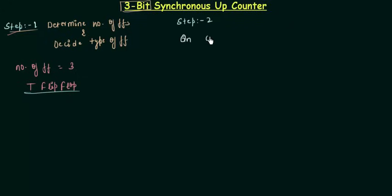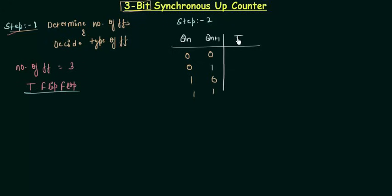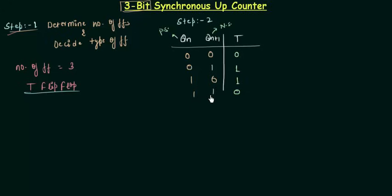For the T flip-flop excitation table, Qn and Qn+1 are the two inputs and the output is T. With two variables we have four possible combinations: 00, 01, 10, and 11. When the present state is 0 and next state is 0, T is 0 (memory). When present state is 0 and next state is 1, there is toggling so T must be 1. Similarly for the third case toggling gives T=1, and the last case gives T=0 since next state equals present state.